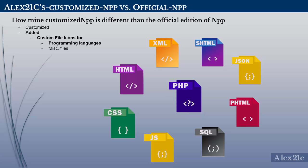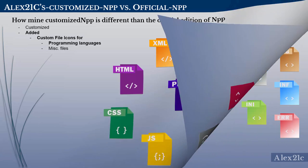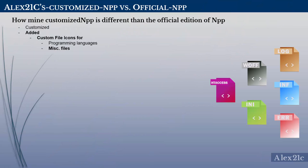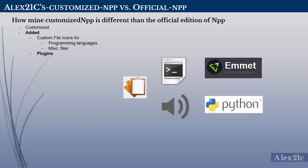This edition of Notepad++ contains custom file icons for various programming languages, including Apache config files, WAF log, initialization, and error files, etc. Along with the customized file icons, I have also provided plugins which include the Multi Clipboard plugin, the Notepad++ Exact plugin, the Emmet plugin, and the Sound and Python Script plugins.